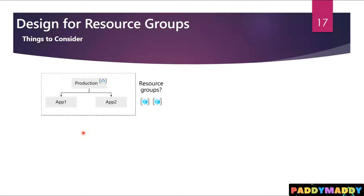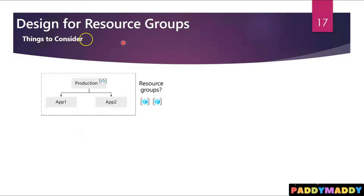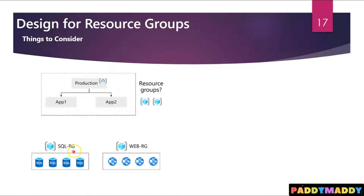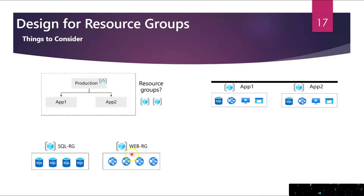Tailwind Traders needs to decide how to organize their resource groups. The first consideration is the type of grouping. For example, all SQL servers go into one resource group, and all web applications like application one and application two go into another resource group. That's one approach.